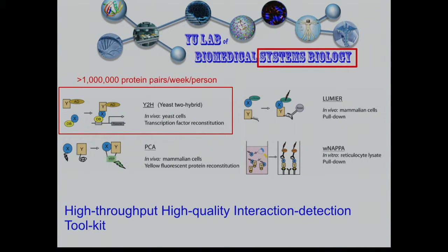If you go back to the early Drosophila and yeast networks, they always reported a core set and a non-core set. For the early yeast Nature 2000 paper, the core set was 800 interactions and the non-core set was 3,000 — the difference being how many times an interaction was seen in the screen. The 3,000 were only seen once. The 800-interaction core set was tested using independent assays and shown to be pretty good quality.